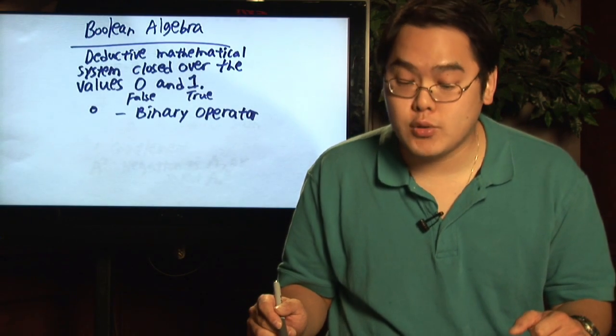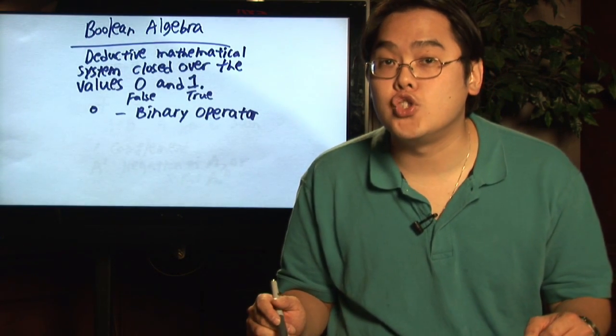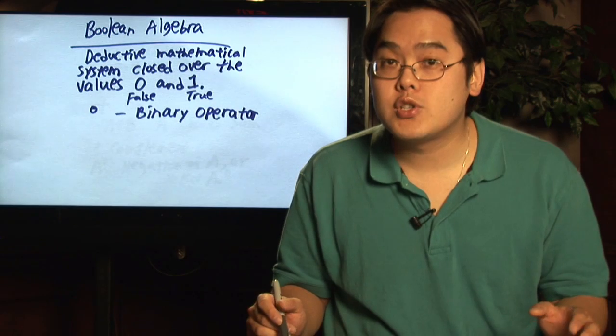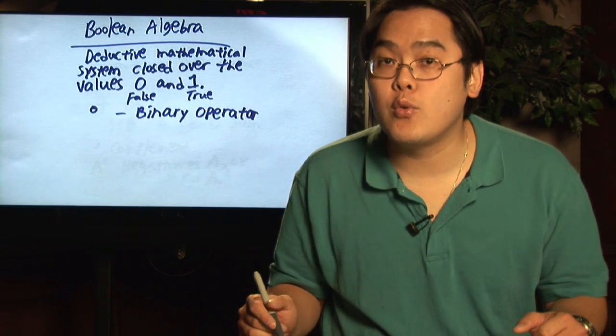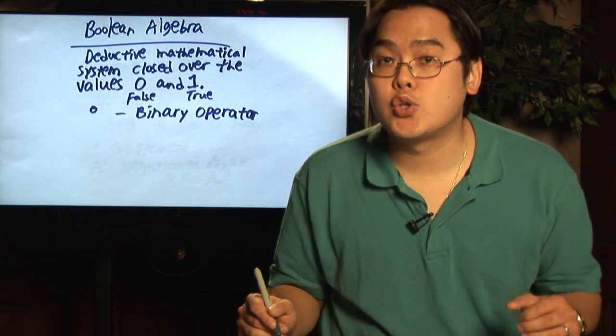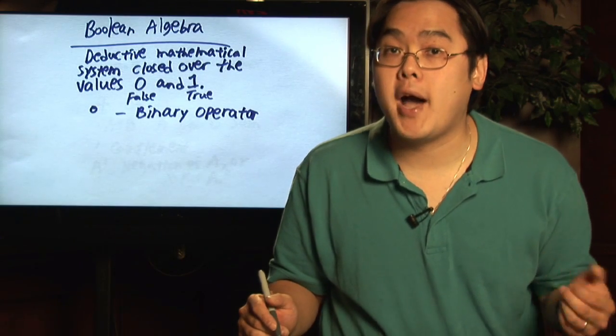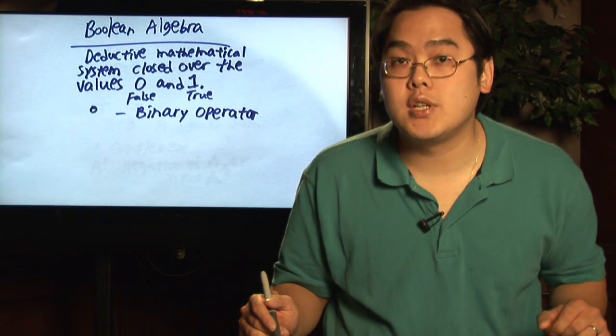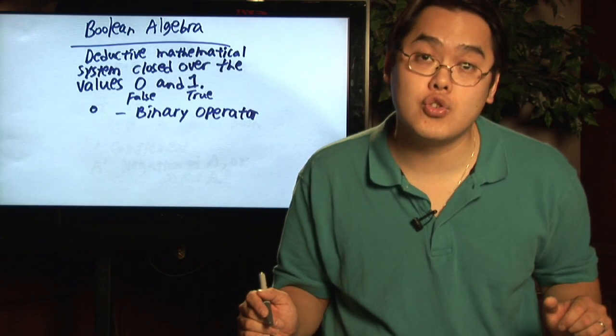Now it's a deductive mathematical system closed over the values zero and one. In other words, it uses the numbers zero and one a lot, meaning that it's closed over the base two or the binary number system. Zero tends to stand for false and one tends to stand for true.